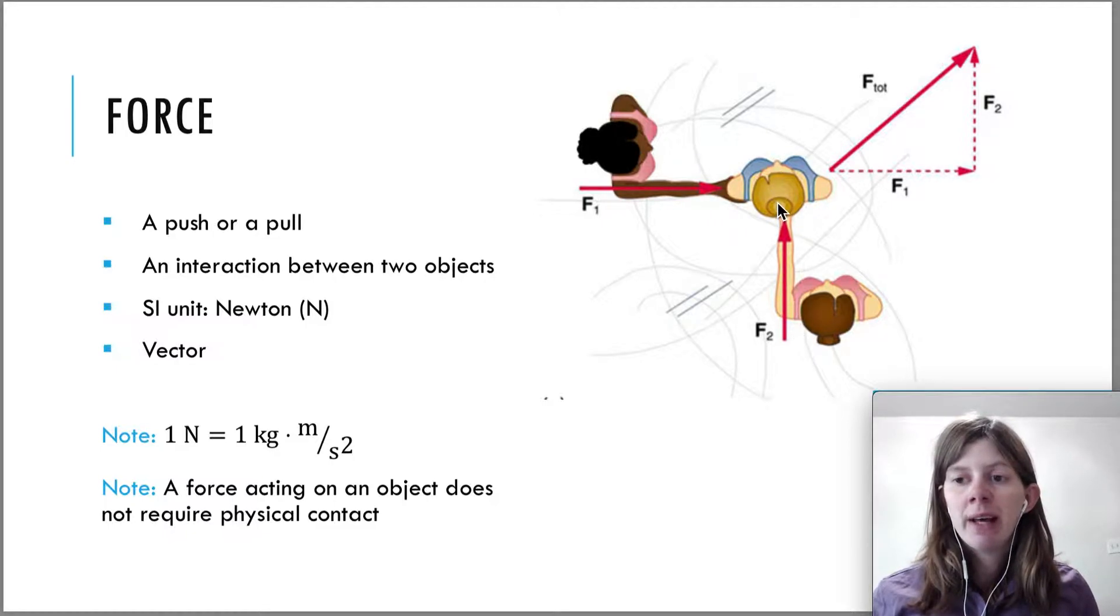What's the net effect of those two forces? You probably know from experience that this person will probably go somewhere to the right here, so you can see that this is vector addition. The net result of these two forces is some kind of force going this way, so we're definitely going to be working with vectors here.